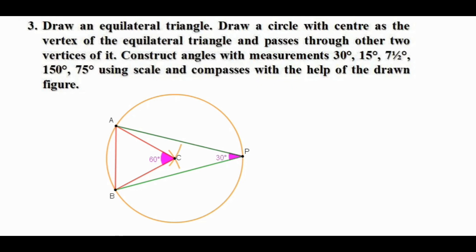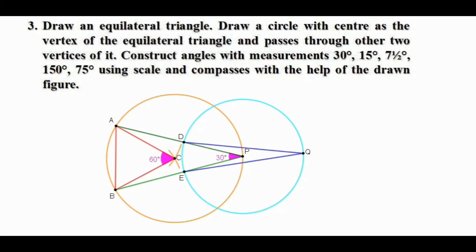Now if angle P is the central angle of an arc, the angle made by that arc would be 15°. Draw a circle with center P with any radius and mark the points of intersection D and E. Consider arc DE — angle P is the central angle of arc DE. Mark a point Q on the alternate arc of the blue circle and join D to Q and E to Q. Since the central angle is 30°, the angle made by the arc is 15° — that is, angle Q is 15°.